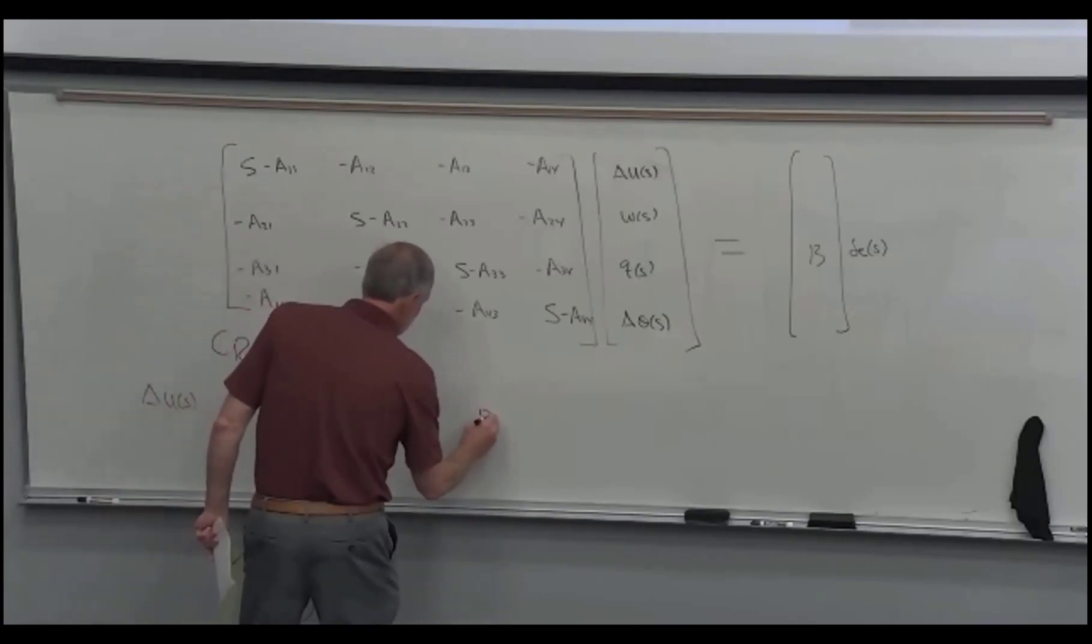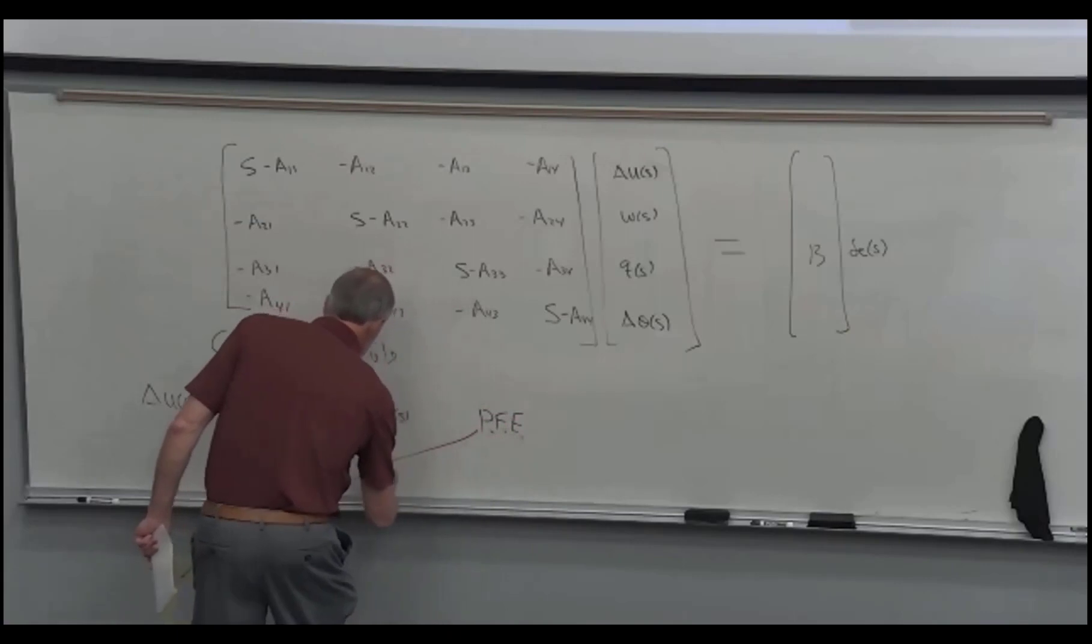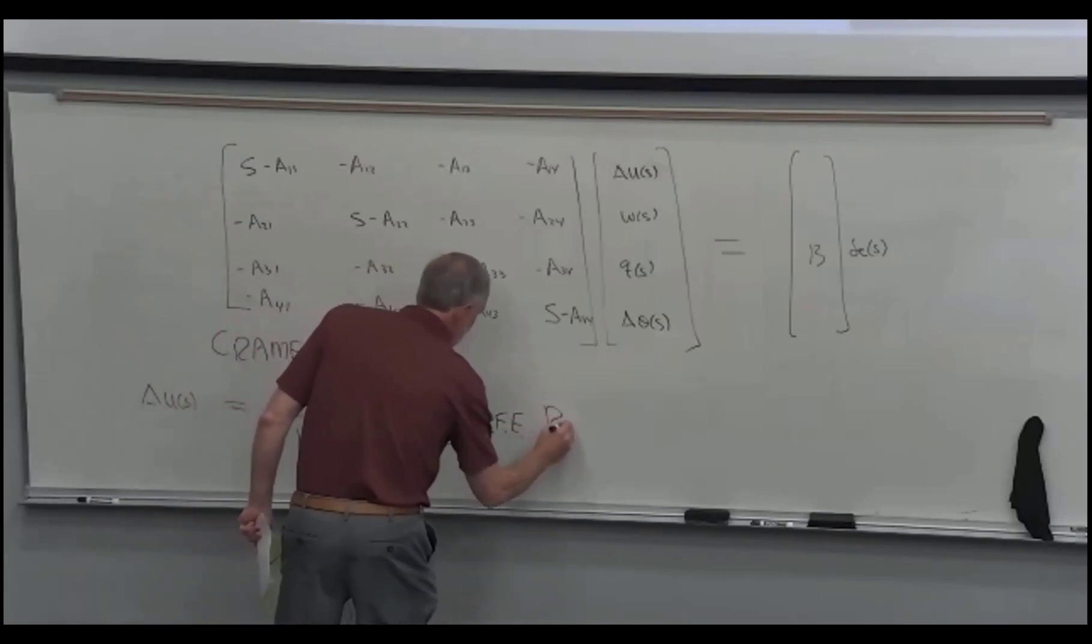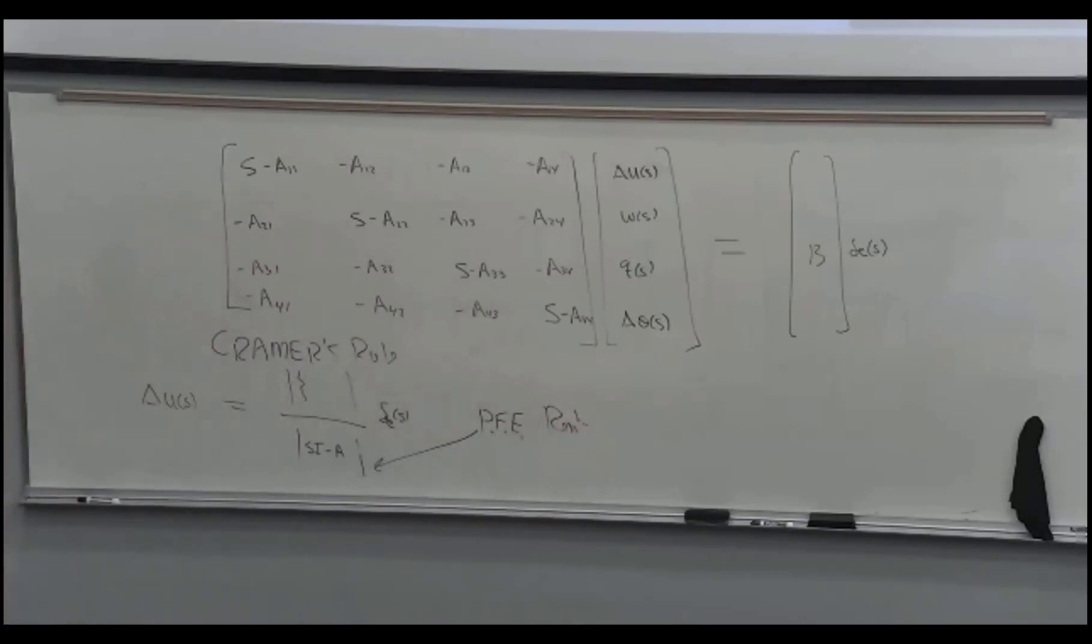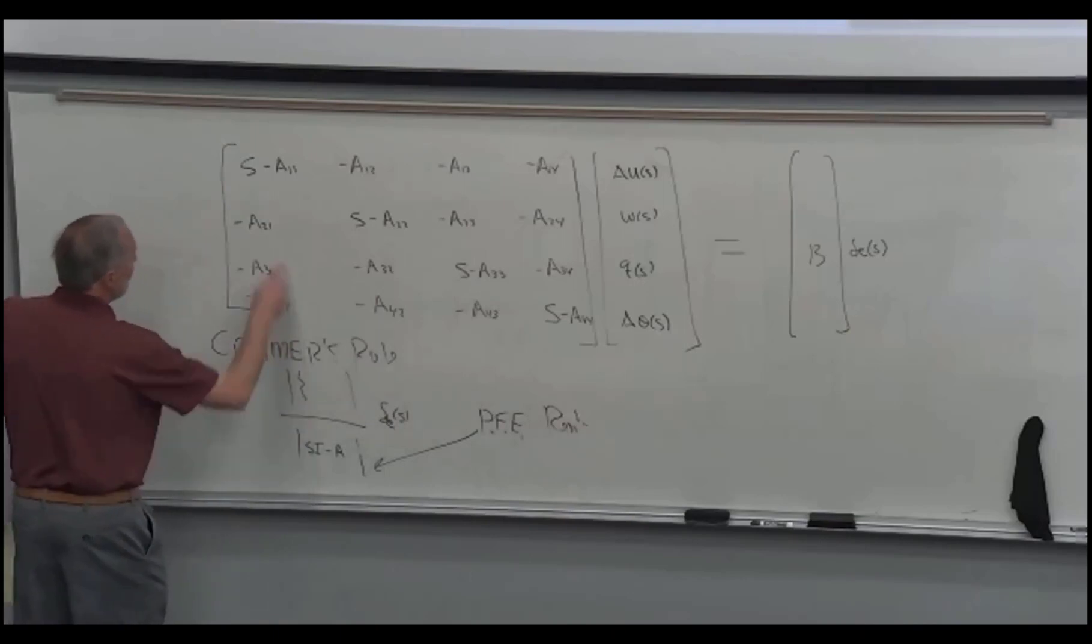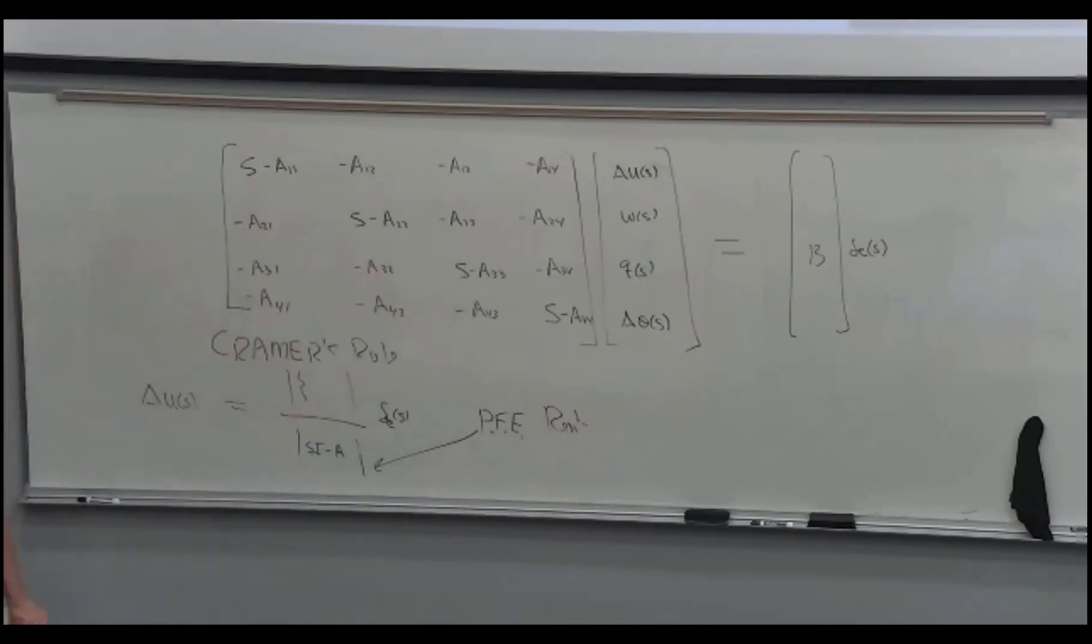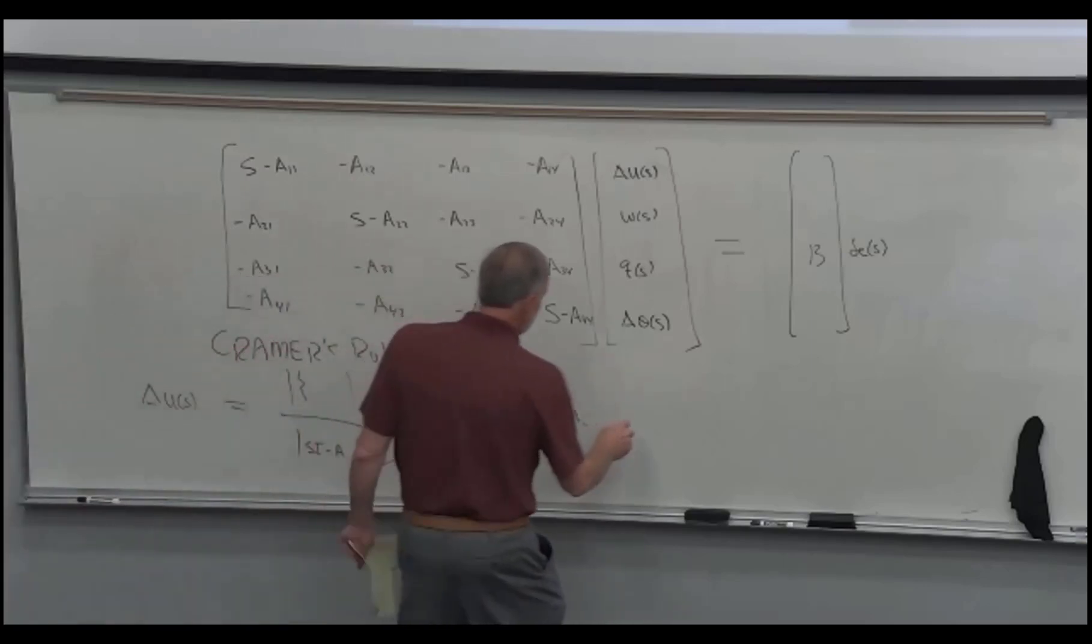So for the partial fraction expansion, when we're solving this, we need the roots of that denominator. Think partial fraction expansion. We're going to factor that thing. It's a polynomial in S. The polynomial comes from multiplying all the S's in the matrix there. And then those are the roots that go into the factors, into the polynomial that we do the partial fraction expansion on.